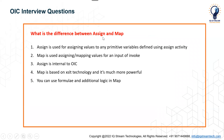The next question is: what is the difference between assign and map? Assign is used for assigning values to any primitive variables defined using the assign activity, whereas map is used for assigning or mapping values for the input of an invoke activity. Assign is internal to OIC and developed within Integration Cloud, whereas map is based on XSL technology — it is also developed in OIC but uses external technology called XSLT and is much more powerful. You can use different formulas and additional logic in the map activity, which is not as powerful in the case of assign activity.